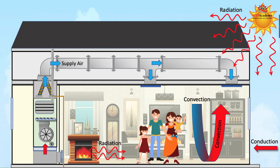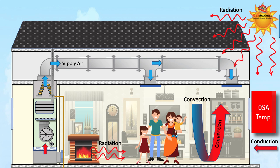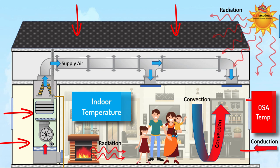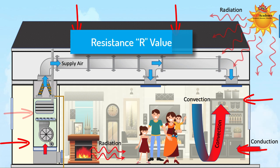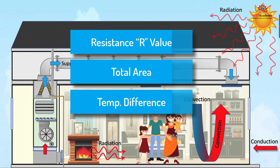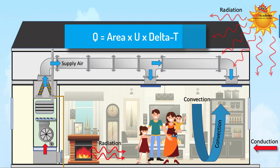Conduction occurs constantly in the home or office when the outdoor temperature surrounding the walls, windows, and roof is different than the indoor temperature. The heat will move through the construction materials at a rate defined by the resistance or R-value of the material, the total square feet, and the temperature difference between outdoors and indoors. Q equals A times U times delta T.